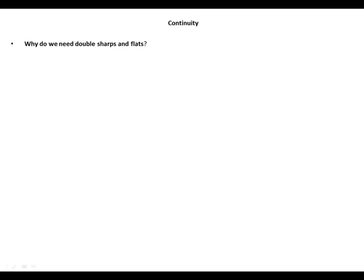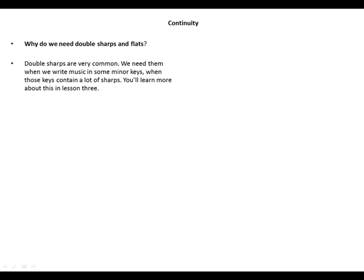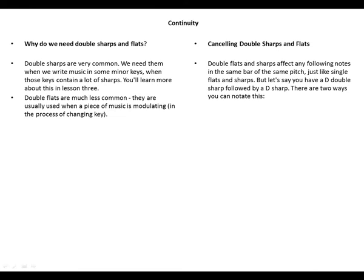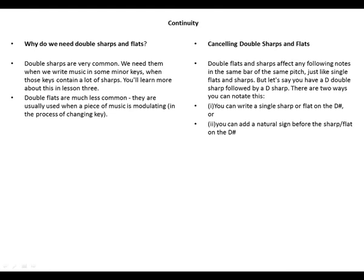Why do we need double sharps and flats? Double sharps are very common — we need them when we write music in some minor keys where those keys contain a lot of sharps. Double flats are much less common; they are usually used when a piece of music is modulating, in the process of changing key. Double flats and sharps affect any following note in the same bar, just like single flats and sharps. If you have a D double sharp followed by a D sharp, you can write a single sharp, or add a natural sign before the sharp — both methods are acceptable.